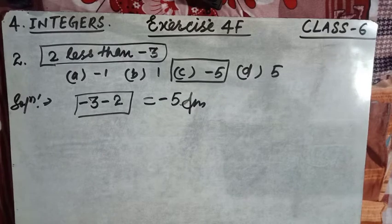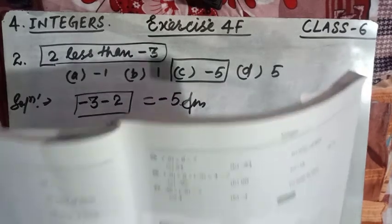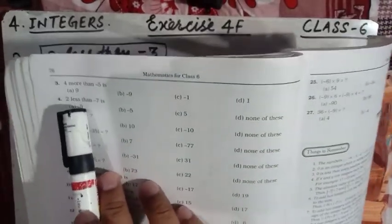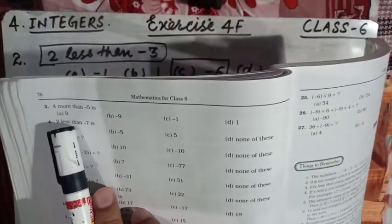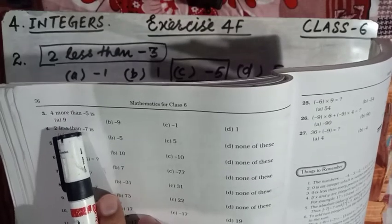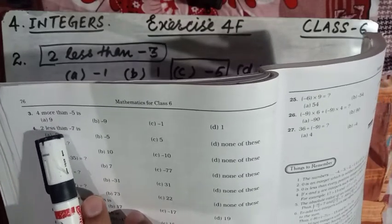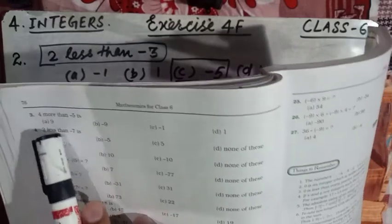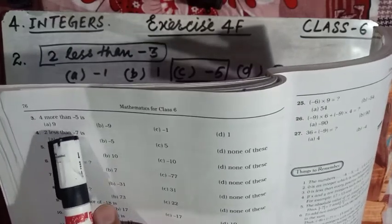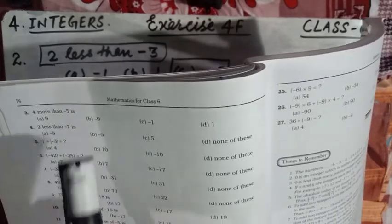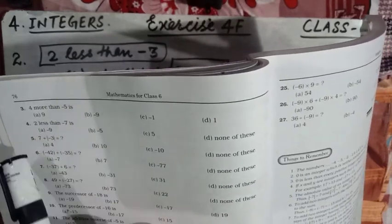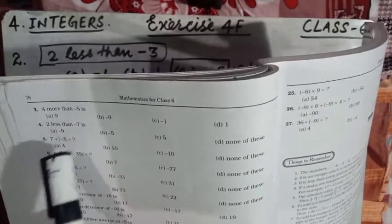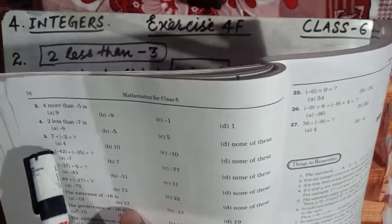Question number 3 says: four more than minus five. That means we have to add four — so it is an addition of the two numbers. We write minus five plus four to get the answer. Now question number 4 says: two less than minus seven, which is the same type as question number 2.